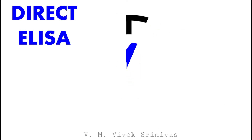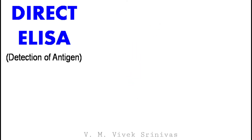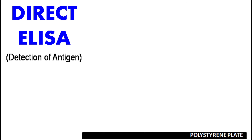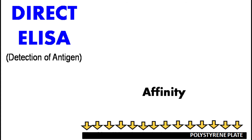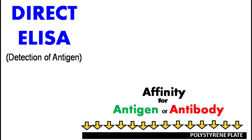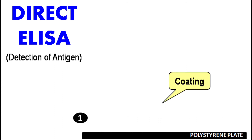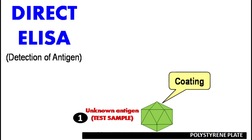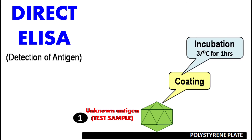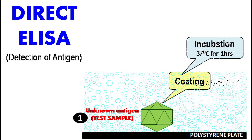Number 1: Direct ELISA, used for the detection of antigen. For conducting ELISA, a polystyrene plate is used. The special property of this polystyrene plate is that it has very good affinity or binding property for any proteins, that is antigen or antibody. In direct ELISA, the first step is coating of unknown antigen, that is addition of test sample. Following coating and incubation, washing is done.